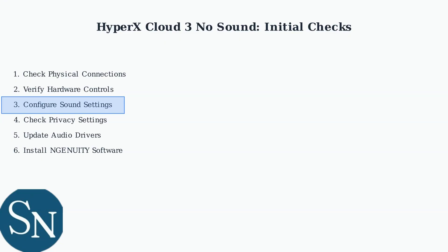For wireless headsets, start by checking the USB wireless dongle connection. Ensure it's securely plugged in and showing proper status lights. For wired headsets experiencing audio cutouts, try the simple solution of unplugging and re-plugging the connection.